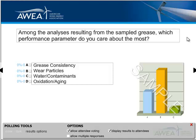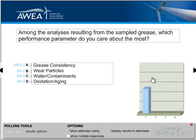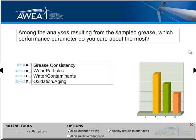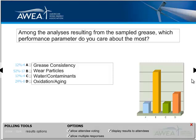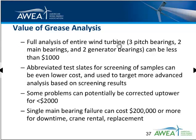Another survey opportunity: among the analyses from grease samples, which performance parameter do you care about most? Options are grease consistency, wear particles, water and other contaminants, and oxidation and aging. Multiple responses are allowed. Results show a lot around wear particles and a decent amount around oxidation and aging, perhaps to optimize the life of the grease or get a better idea of how frequently grease may need to be added or replaced.